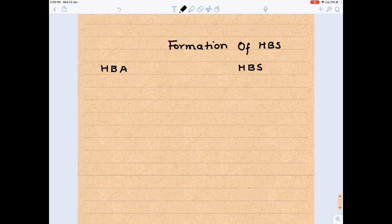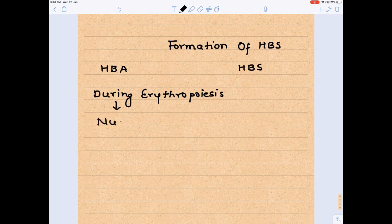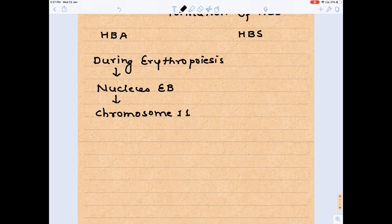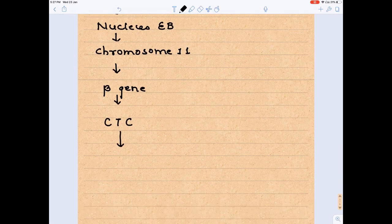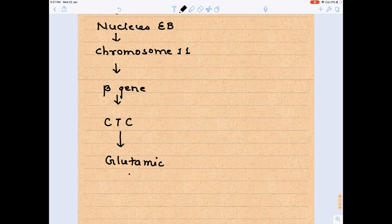Let's make notes. Formation of hemoglobin S. During erythropoiesis, let's visit nucleus of the erythroblast which is having chromosome number 11. Inside chromosome number 11, there is a beta gene. In the 6th position of the beta gene, there is a codon called CTC which is coding for glutamic acid.